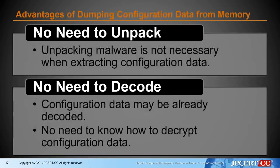Why use Volatility? It is effective to analyze the memory dump. There are two advantages. First, no need to unpack — when extracting configuration data, it is not necessary to unpack the malware. Second, no need to decode, because encoded configuration data may already be decoded in memory. You may be able to skip learning how to decrypt configuration data.